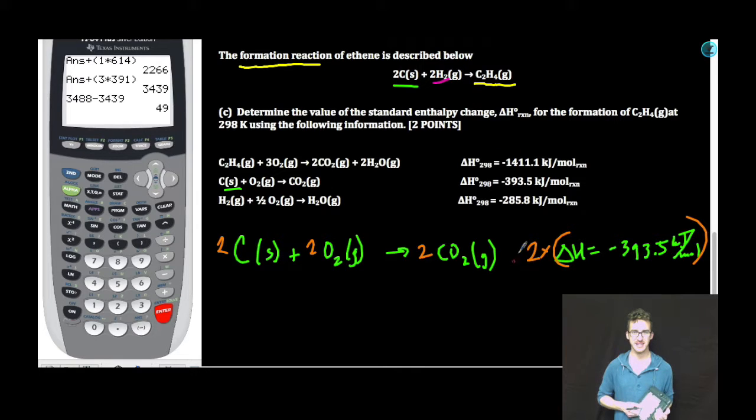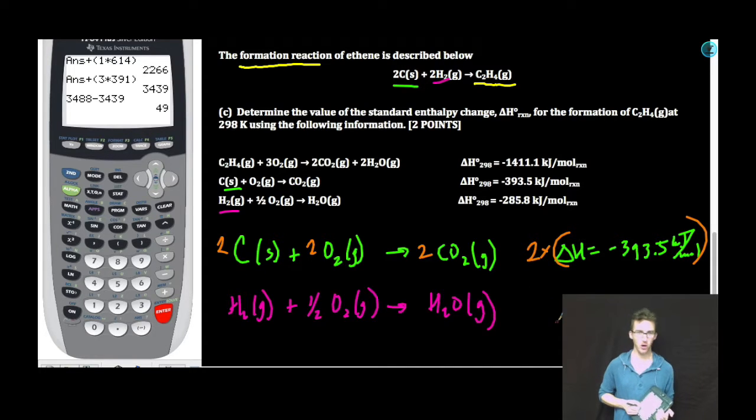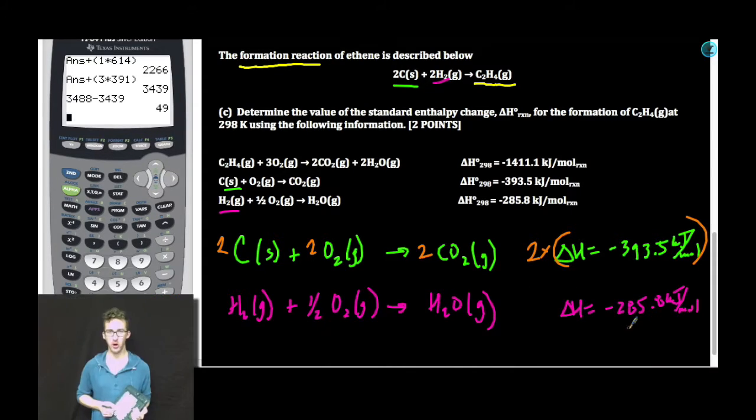Next, I need some hydrogen. As I scan my equations, also on the reactant side, I'm just going to rewrite that equation as is. Enthalpy change, double boom. Again, notice I need two moles of hydrogen. So I'm going to multiply everything in the equation by two, including my enthalpy change.